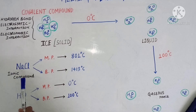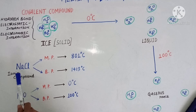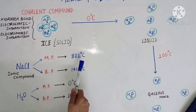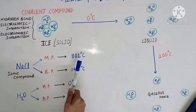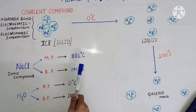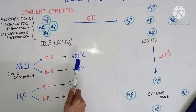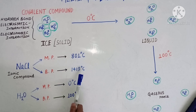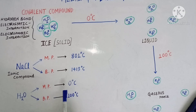Now, if you take an example of an ionic compound, for example NaCl — if you try to transform NaCl, which is an ionic solid, into its liquid state, then NaCl requires 801 degrees Celsius to melt. So the melting point of sodium chloride is 801 degrees Celsius. And if you want to convert this melted sodium chloride into its gaseous form, the boiling point of molten sodium chloride is 1413 degrees Celsius.